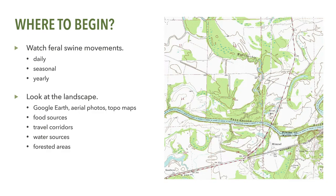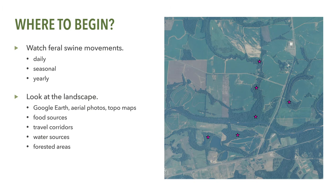Topographic maps may help identify lowland areas that may hold water during the summer and fall months. Likewise, satellite imagery or aerial photos available from online programs such as Google Earth can be used to determine likely areas where feral swine may be staying or traveling. Careful inspection of these landscape features will often provide a good starting point for on-the-ground scouting.